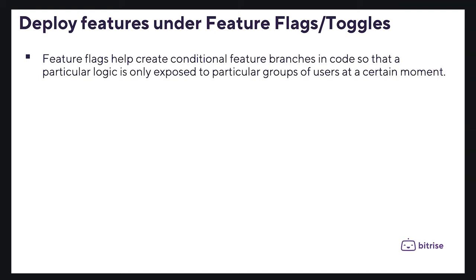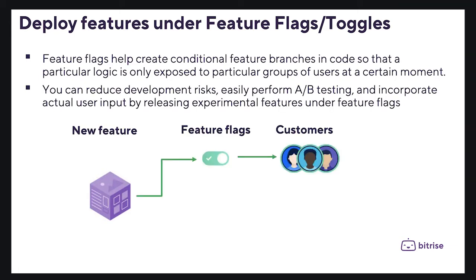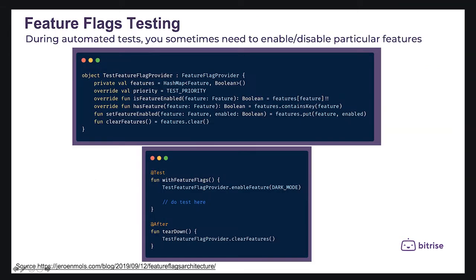Feature flags also help create conditional feature branches in code so that particular logic is only exposed to particular groups of users. You can reduce development risks, easily perform A/B testing, and incorporate actual user input by releasing experimental features under feature flags.